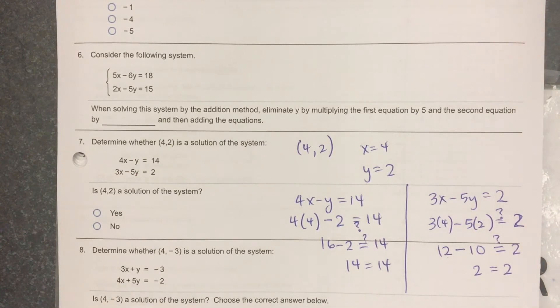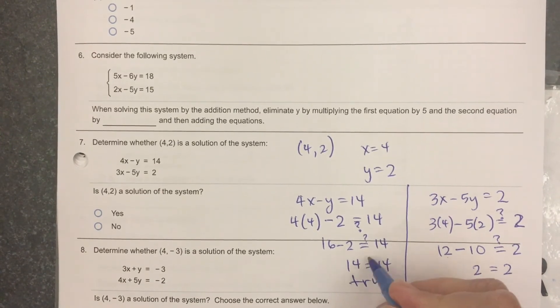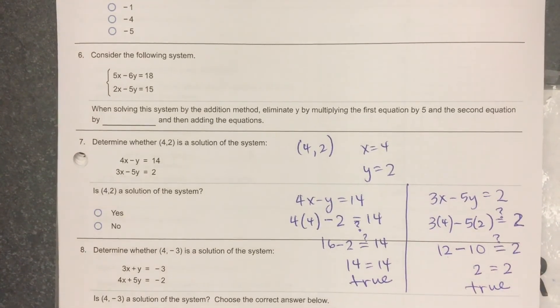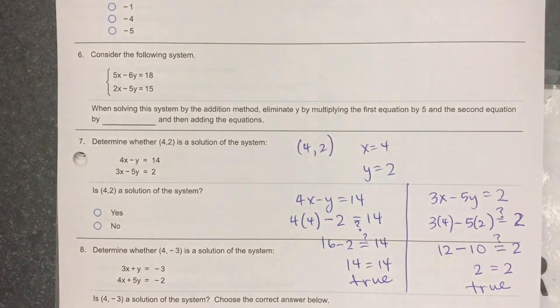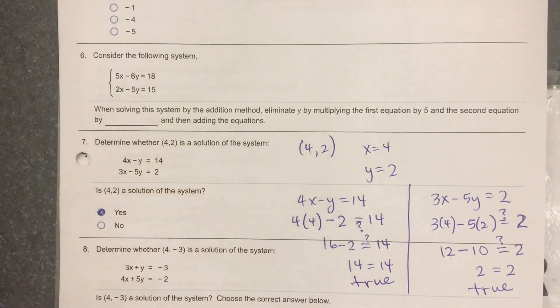So yes. I got a true statement when I plugged it into each equation. I'm going to write the word true under that, and true under 2 equals 2. Because I got true for both of them, is it a solution? The answer is yes.